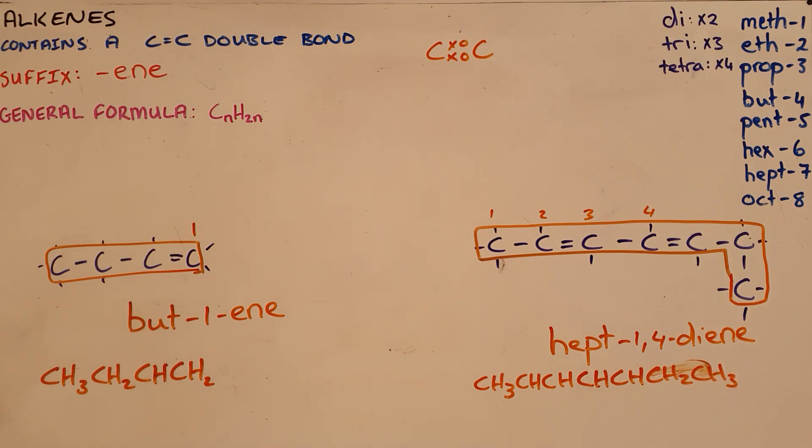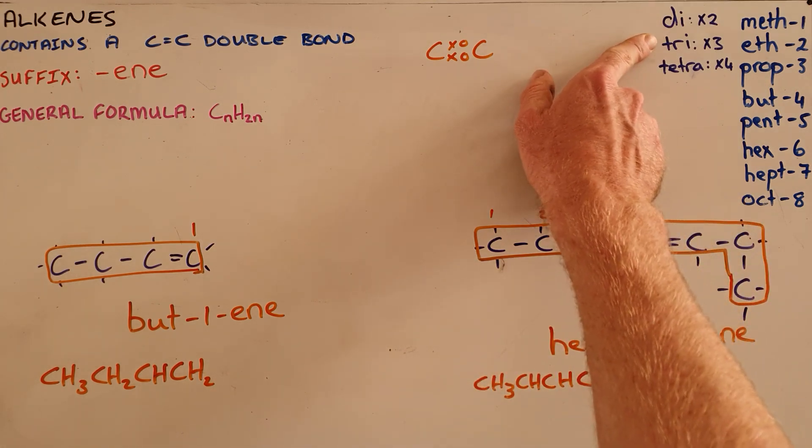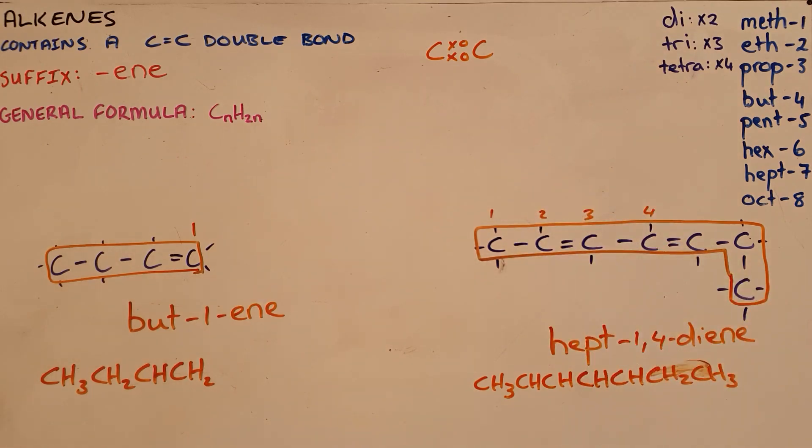Alkenes are unsaturated compounds because they contain a double bond. When there are multiple double bonds, we indicate that with DI for two, TRI for three, and TETRA for four.